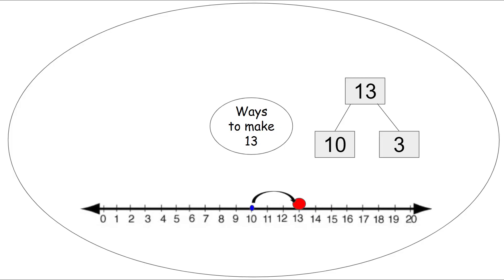We can also use a number line to show the number 13. We start on 10 and we jump 3 times. 1, 2, 3. And then we land on the red dot, which is 13. 10 and 3 more. 3 jumps makes 13.